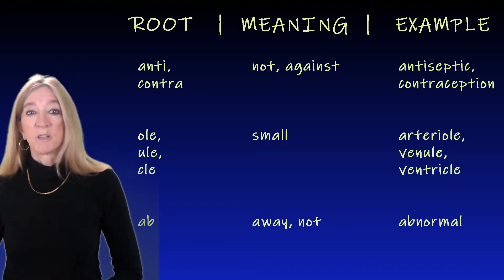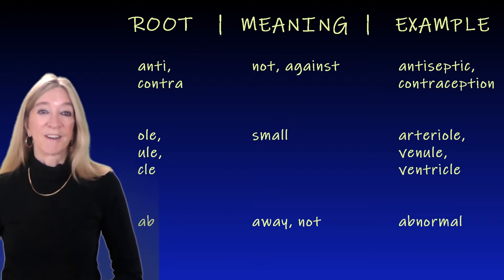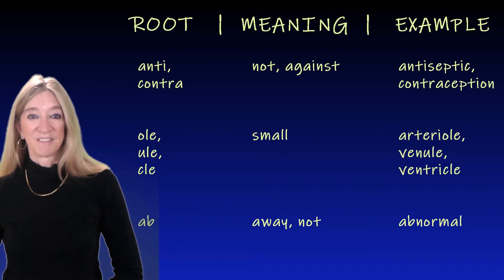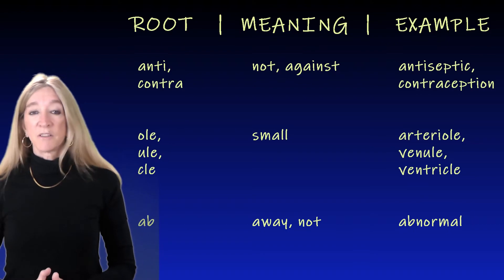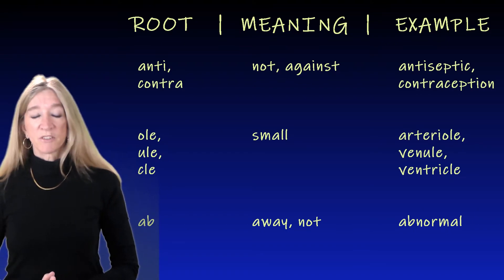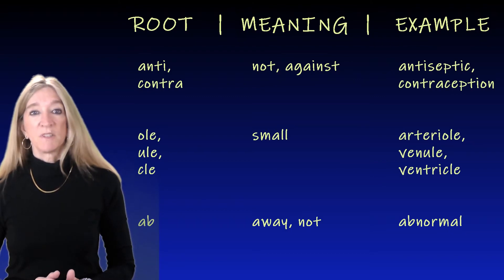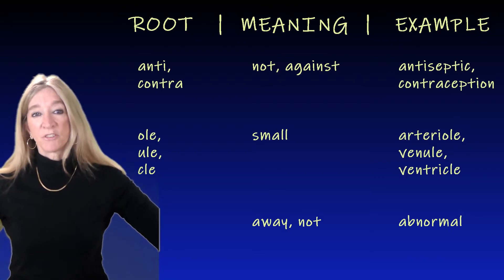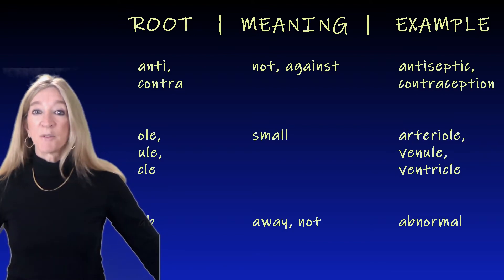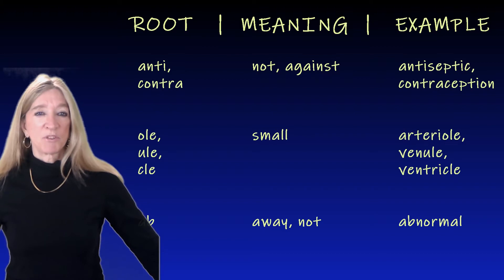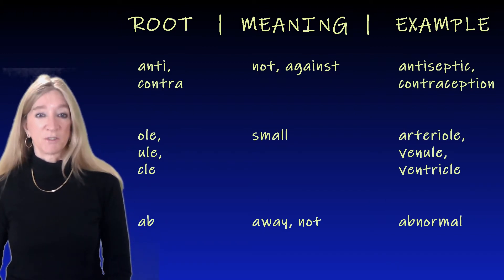The next root, 'ab,' meaning away. An example is abnormal — not normal, away from normal. Another example applying to both medical terminology and real life is the word abduct, meaning to lead away. Abduction is the movement of limbs away from the body, away from the center. The opposite root is 'ad,' meaning towards — adduction meaning movement towards the center of the body.